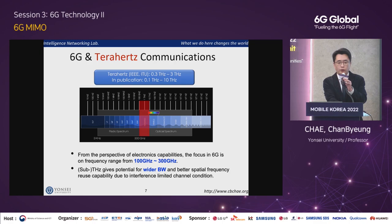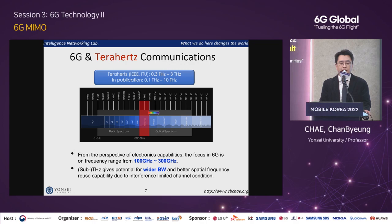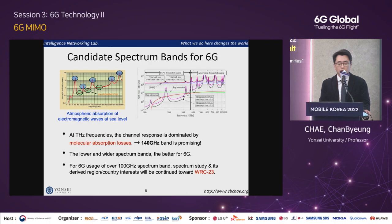Just as we moved from sub-6 GHz spectrum to millimeter wave spectrum for 5G, we may now have one more migration to much higher spectrum. The IEEE-ITU defines terahertz as 0.3 THz to 3 THz, but the academic community uses 0.1 THz to 10 THz. From the perspective of devices and subsystem capabilities, we will focus on the range from 100 GHz to 300 GHz.